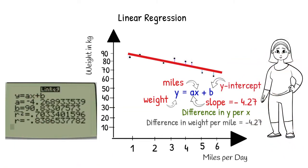b is the y-intercept. The y-intercept is y, or in this case weight, when x, or in this case miles walked per day, is 0.